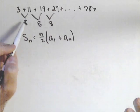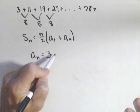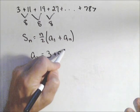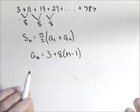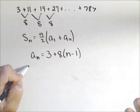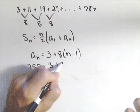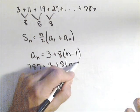Well, if we know the common difference in the first term, we can set this up. The general term is a sub n equals three plus eight times n minus one. And we want to know what the term for 787 is. So 787 equals three plus eight times n minus one.